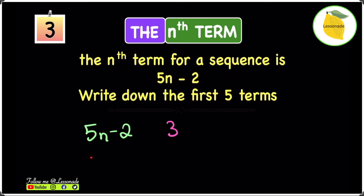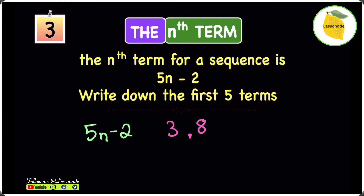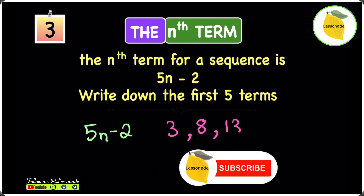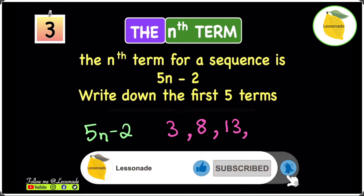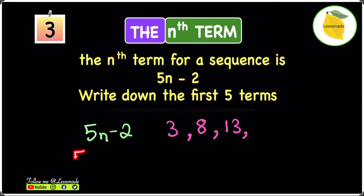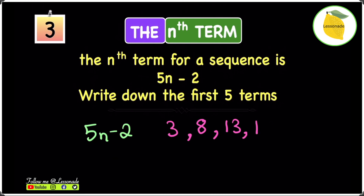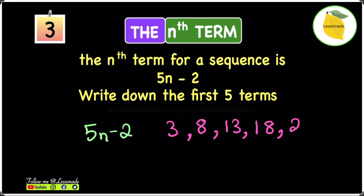For n = 3: 5 times 3 minus 2, so 15 minus 2 equals 13. For n = 4: 5 times 4 minus 2, so 20 minus 2 equals 18. For n = 5: 5 times 5 minus 2, so 25 minus 2 equals 23. So our first five terms are 3, 8, 13, 18, 23.